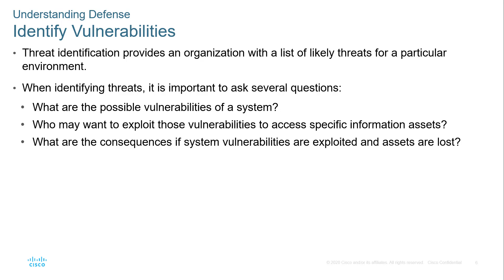When talking about vulnerabilities, we may want to ask a few questions: What are the possible vulnerabilities of a system or organization? Who may want to exploit those vulnerabilities to access specific information or data? What information might be of value to external resources? And what are the consequences if the system vulnerabilities are exploited and assets are lost? I've actually had one organization that looked at the cost of losing an asset and weighed it against the price of protection. When it became cost-prohibitive — meaning protection cost more than the asset's value — they simply didn't protect the asset.